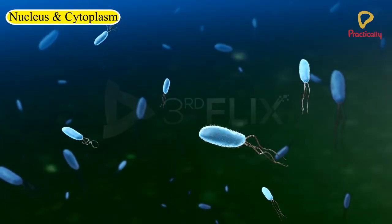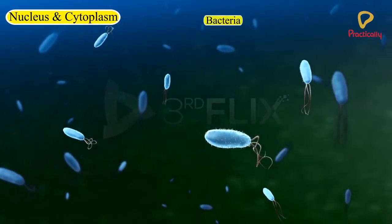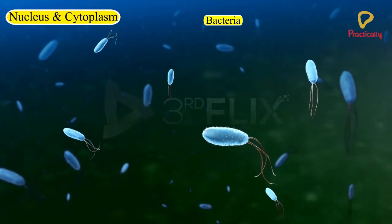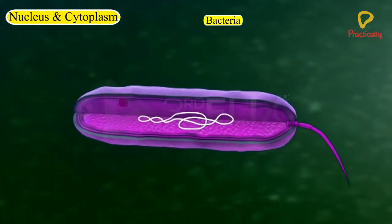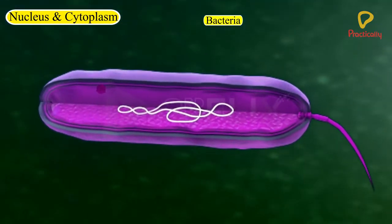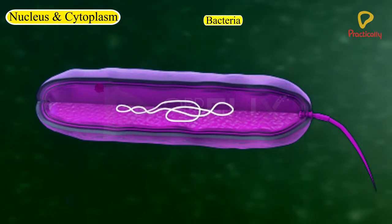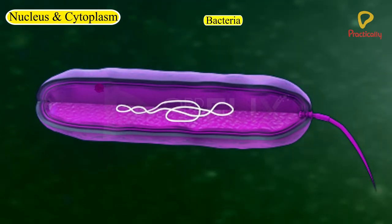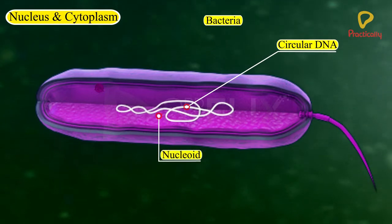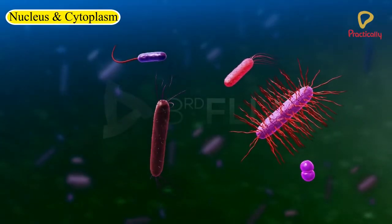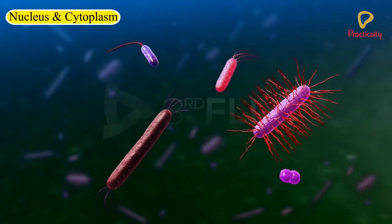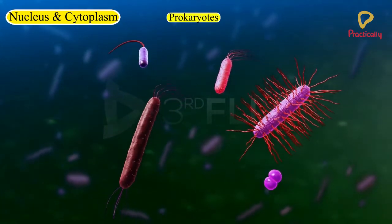In some organisms like bacteria, the nuclear region of the cell may be poorly defined due to the absence of a nuclear membrane. Such an undefined nuclear region containing only nucleic acids is called a nucleoid. Such organisms, whose cells lack a nuclear membrane, are called prokaryotes.